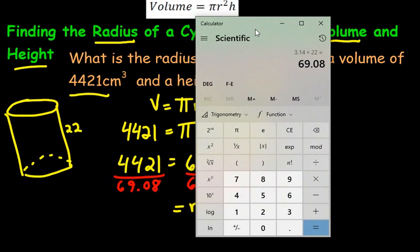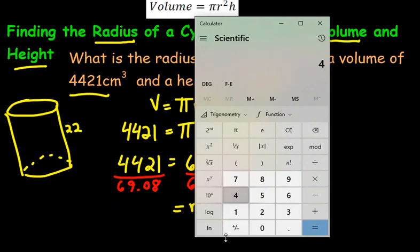what is 4421 divided by 69.08? In order to speed that process up, I'm using a calculator, 4421 divided by 69.08. And I'm going to round it off to the nearest decimal. Because there's a bunch of nines here after the decimal, I'm going to round it off to just 64.